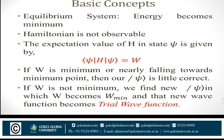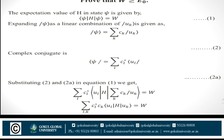The variation method consists of choosing a trial wave function depending on one or more parameters, and finding the values of these parameters for which the expectation value of the energy is the lowest possible. We prove that W is greater than or equal to E₀. The variation method is used primarily for the estimation of the ground state energy, and it is based on the fact that the lowest value which the expectation value of the Hamiltonian can take is the ground state energy E₀.